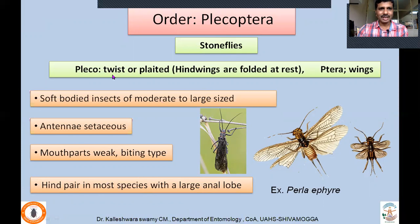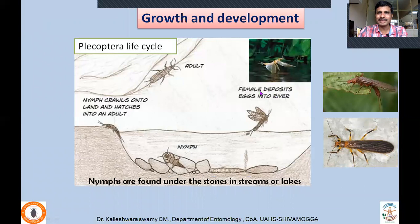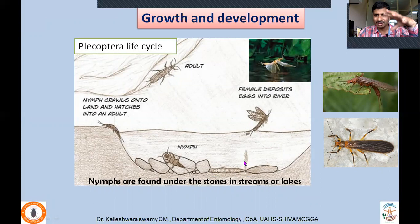Next order: Plecoptera — commonly called stoneflies. 'Pleco' means twisted or plaited, referring to how hindwings are folded at rest; 'ptera' means wings. They are soft-bodied insects, moderate to large in size. Antennae are setaceous, like in cockroaches. Mouthparts are weak and biting type — most species rarely feed as adults. Coming to growth and development: similar to mayflies (Ephemeroptera), adults deposit eggs directly into water bodies, and the aquatic nymphs (naiads) remain under submerged stones — that is why they are called stoneflies.